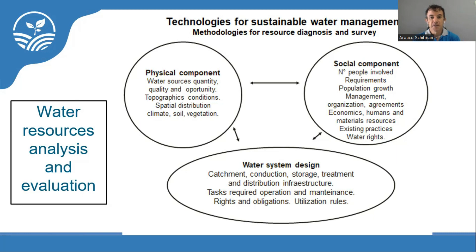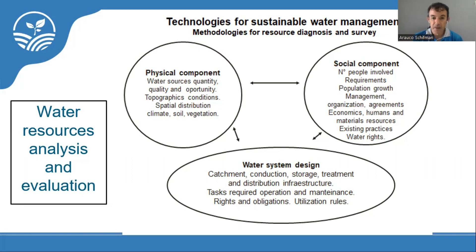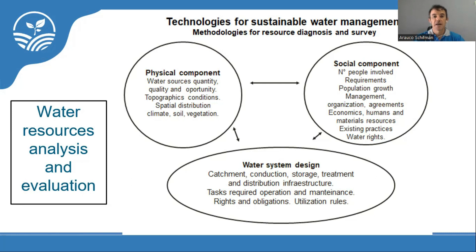When we have those two components, we can do a water system design — the catchment, conduction, storage, treatment, and distribution infrastructure for the correct water use. We need to consider the tasks required for operation and maintenance, the rights and obligations, and the utilization rules.